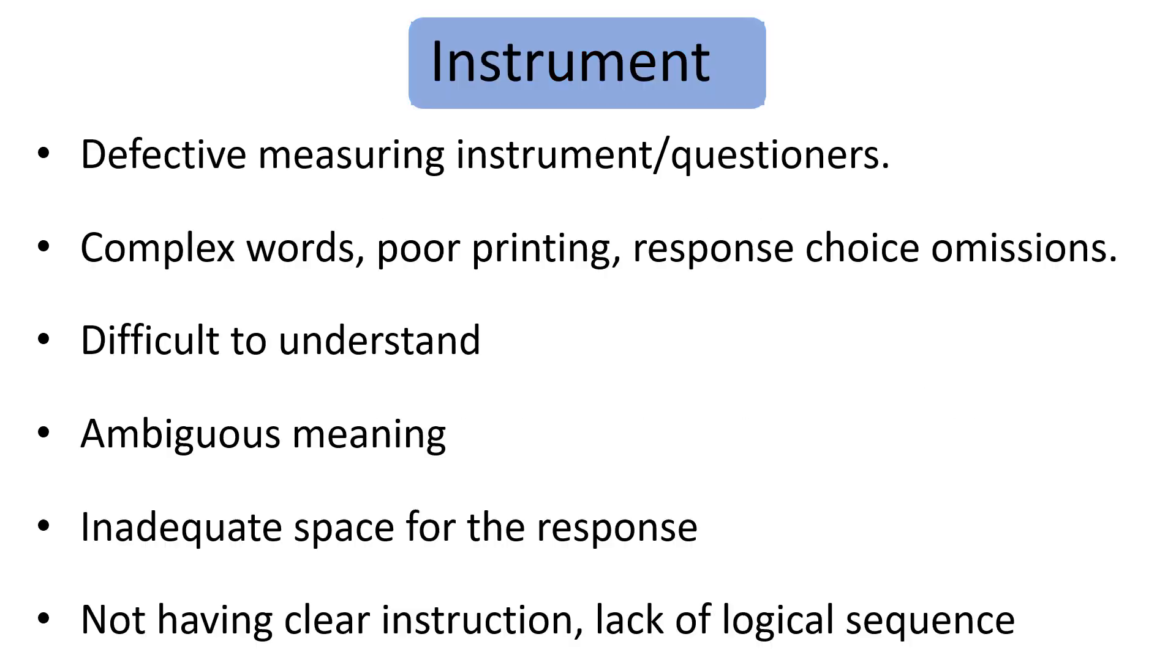Moving to the last type of source of error in measurement is the instrument. Using defective measuring instruments or questionnaires can be a source. Or using complex words, poor printing of the questionnaires, or omissions of the response choices. For example, if our questions are multiple choice and if we omit the choices, there may be an error in data collection.